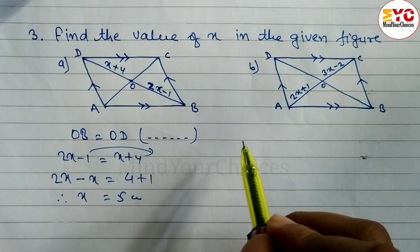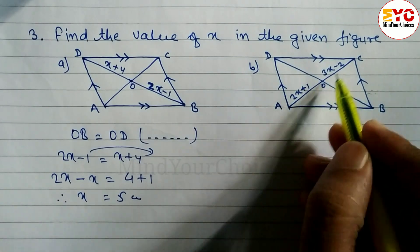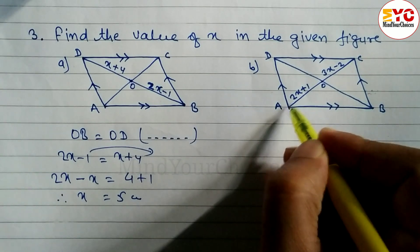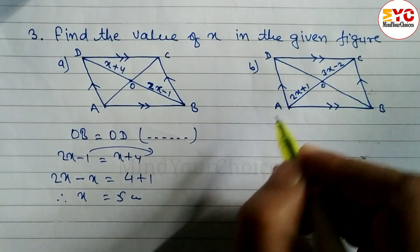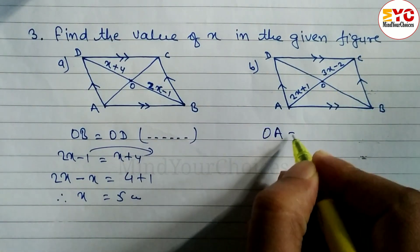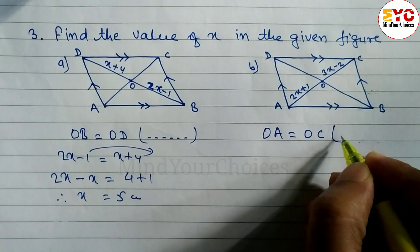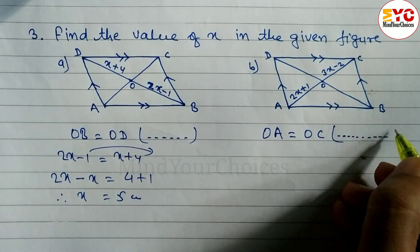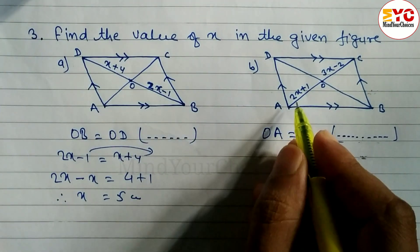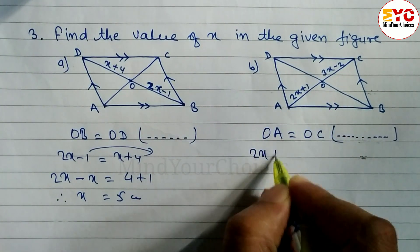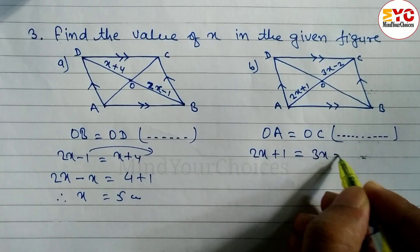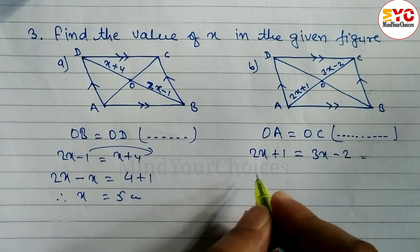ABCD is a parallelogram. It means a diagonal is given, and we know that diagonals bisect each other. It means OA and OC both are equal. So we can write here OA is equal to OC. Reason: same as before, diagonals of a parallelogram bisect each other. We have to write down, what is the value of OA here? 2X plus 1 is equal to, what is the value of OC? 3X minus 2. And now, just we have to solve it.